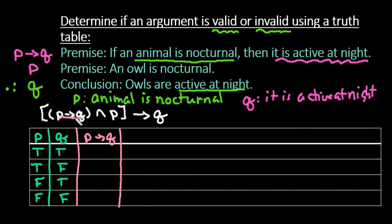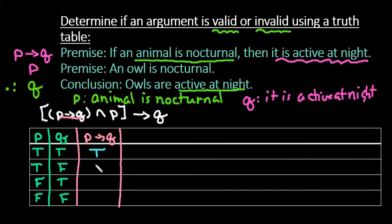Remember that the if-then statement is true in every situation except when the if part is true followed by a false then part. So if the conclusion is false when the antecedent is true, that's when we would put false. If the first statement is true while the second is true, then we have a true if-then statement. If the first statement is true while the second one is false, that is when it is false because the if part is true but the consequence didn't happen. False-true is also true, and false-false is true.